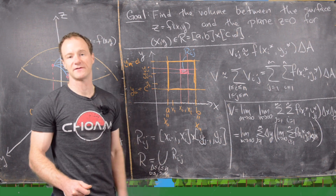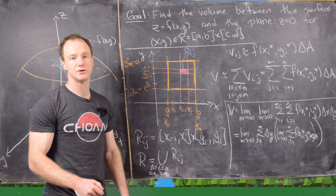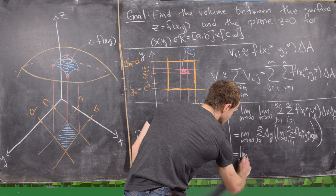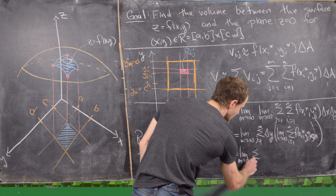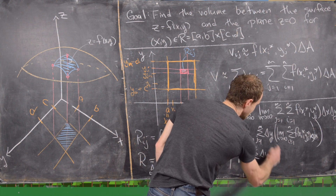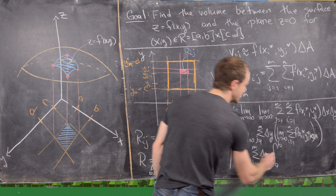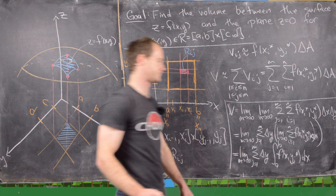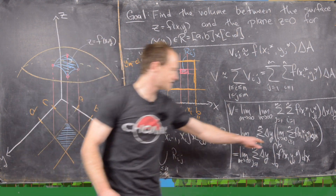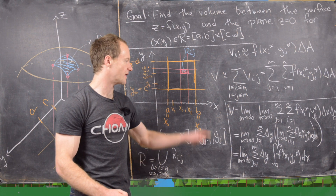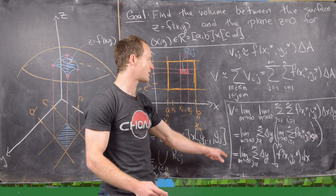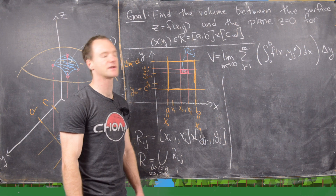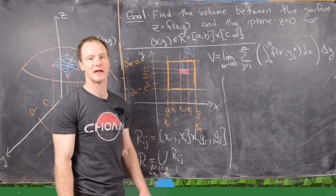We can rearrange this as the limit as m goes to infinity of the sum over j from 1 to m, times delta y, with inside it the limit as n goes to infinity of the sum over i from 1 to n of f(x_i*, y_j*) times delta x. From Calculus 1, that inner expression is exactly the integral from a to b of f(x, y) dx, where y is treated as a constant.